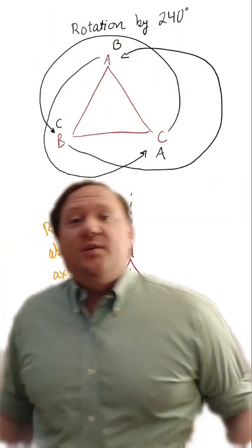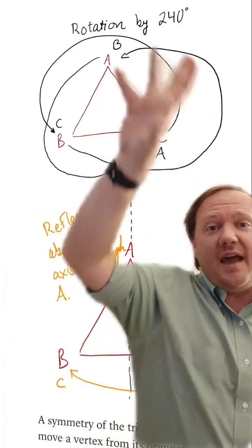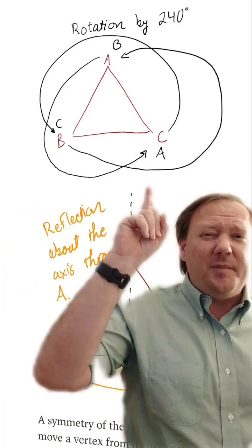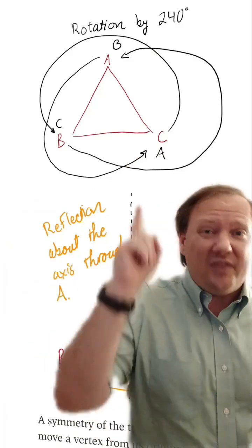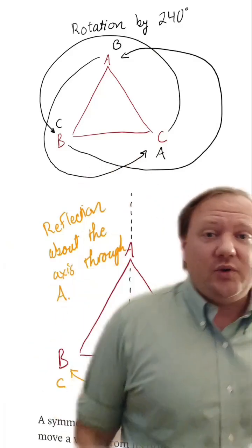And you could do another rotation by 120 degrees after that. That would send all of the vertices back to where they came from, and technically we will consider that its own symmetry of the triangle.